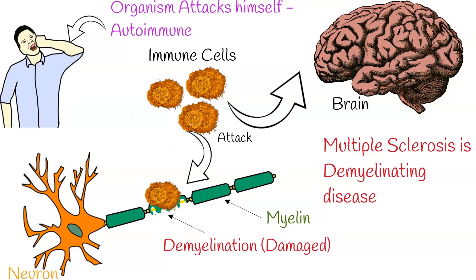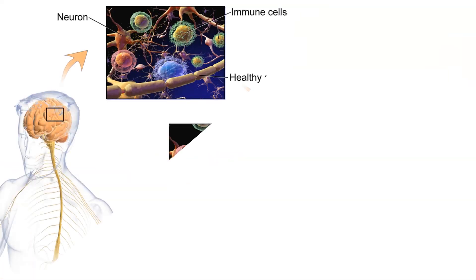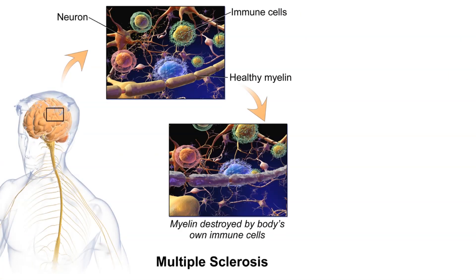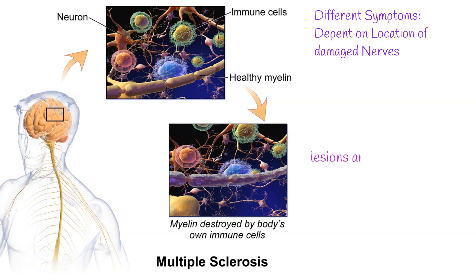Multiple sclerosis is the most common demyelinating disease. Symptoms can vary depending on the location and damage strength. Lesions are disseminated in time and space — that's why it is called multiple sclerosis.